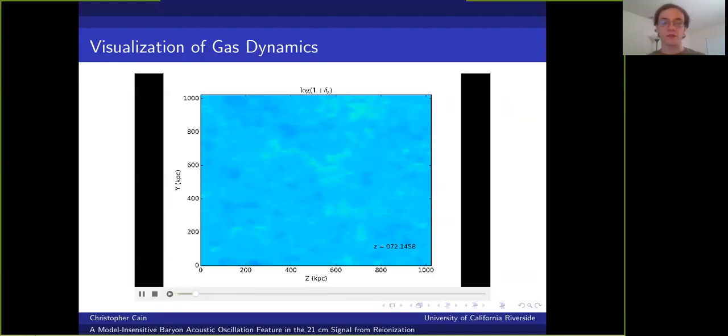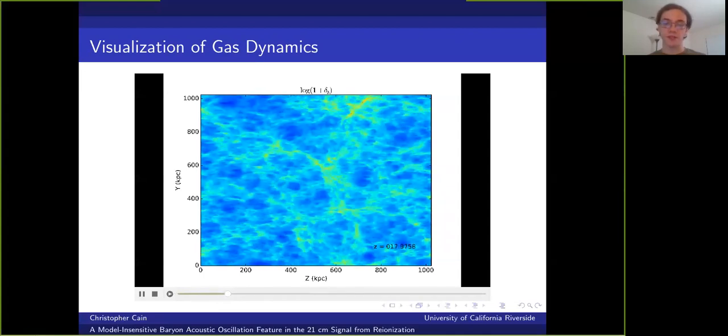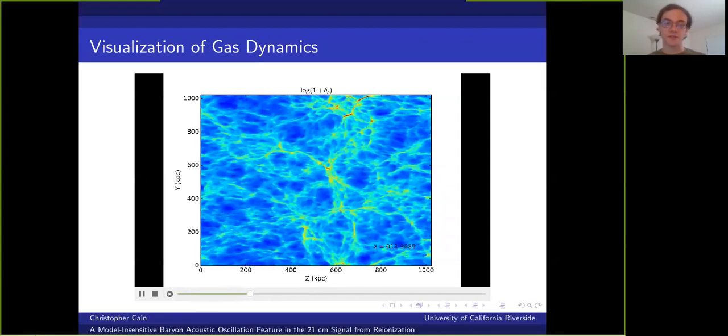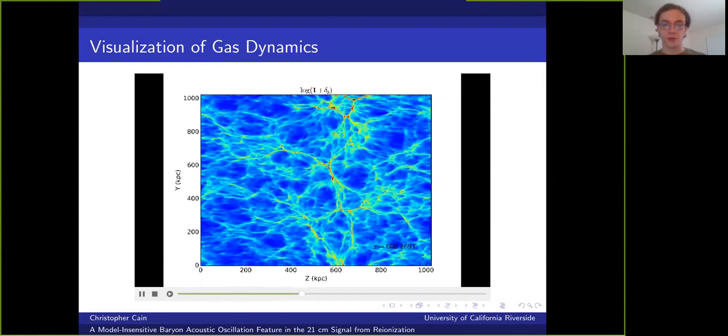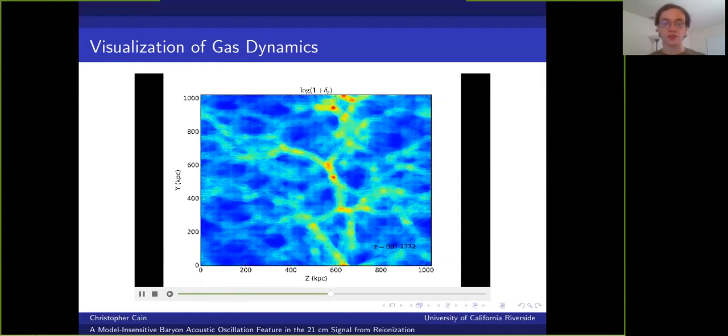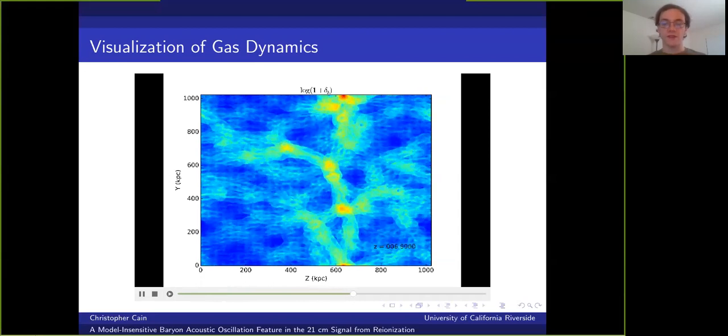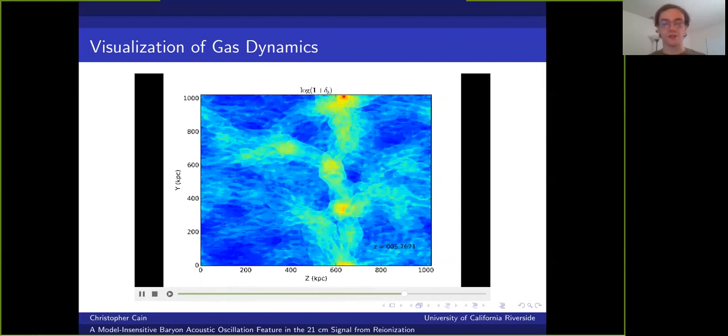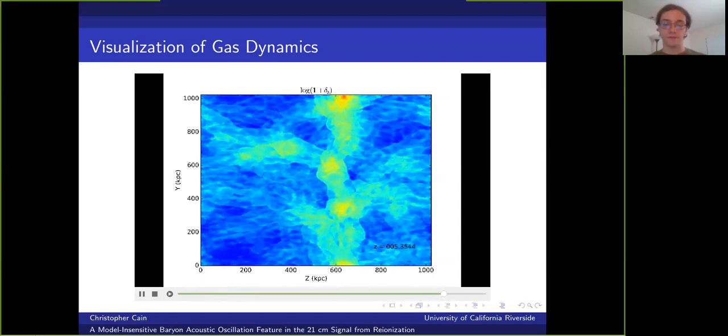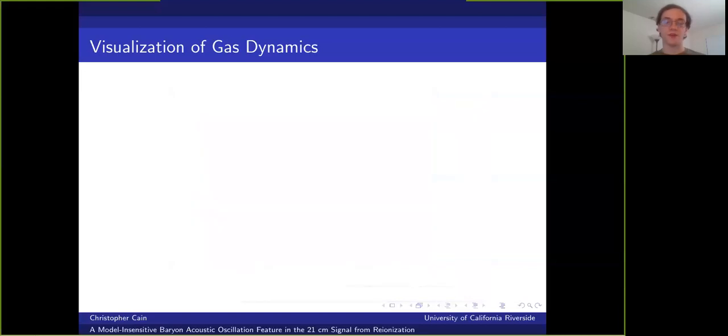So here's a short movie showing how the gas evolves in one of our simulations. You can see that the gas first collapses into filaments at high redshift following the evolution of the dark matter substructure. And when the radiation turns on at redshift 8, the dense filaments are quickly photo heated and they respond by relaxing into the surrounding medium over several hundred million years. Note that the simulation domain is set up so that all the gas ionizes at about the same time. This is to avoid time delay effects.